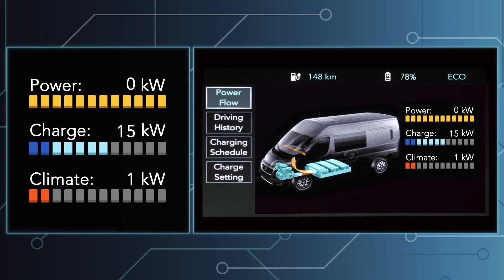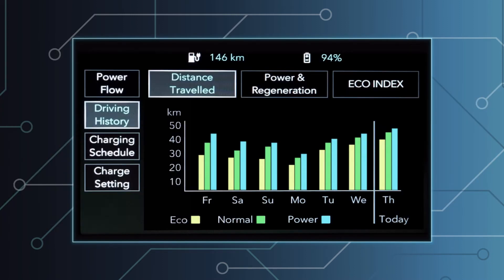In the driving history section, a graph shows the distance traveled each day in each driving mode: eco, normal, and power. On the right is the current day, and on the left are the previous six days.